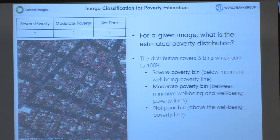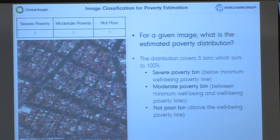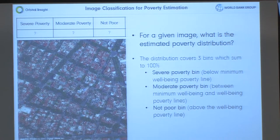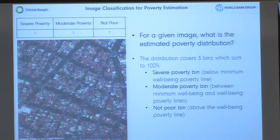We have satellite imagery from high-resolution sources — pixels approximately 30 to 50 centimeters in ground distance — and we have medium-resolution imagery at three to five meters in ground distance. These show different things. High-resolution imagery lets you see things such as cars and more detail in the image, but the images tend to be smaller, so the contextual coverage is less.